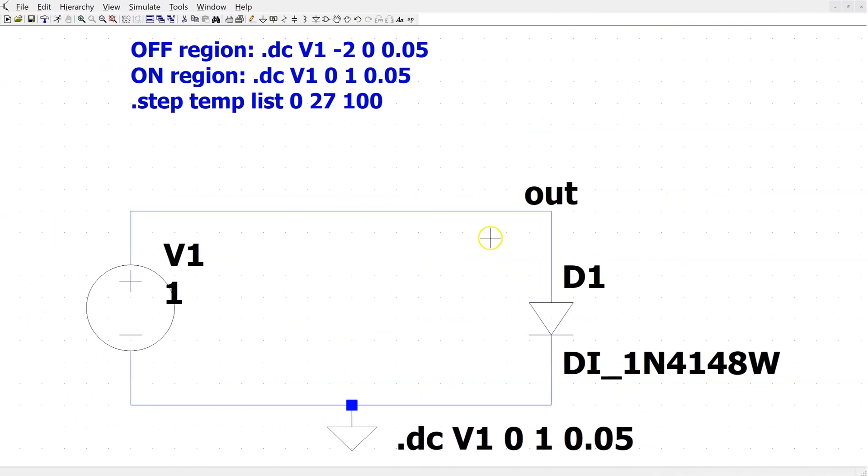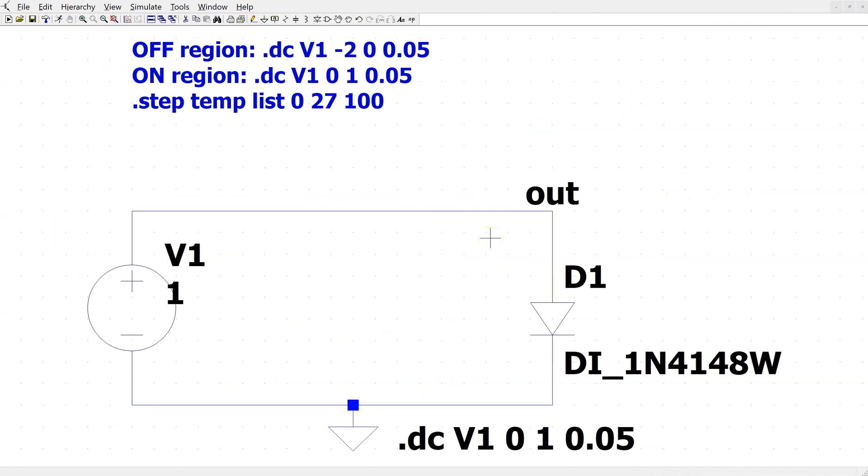This is the circuit to simulate diode characteristics in LTSpice. For the purpose of efficient simulation, we connect a DC voltage source directly across a diode. By varying the voltage source magnitude, we can vary the voltage across the diode.